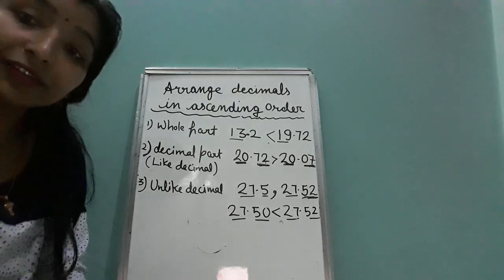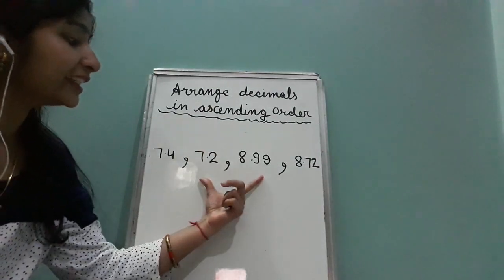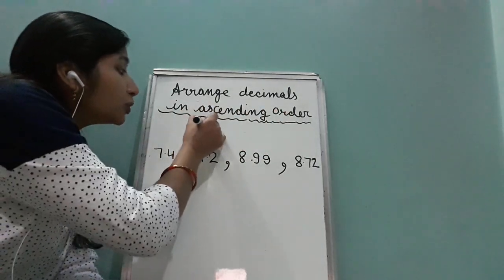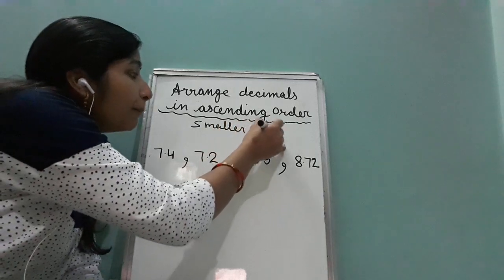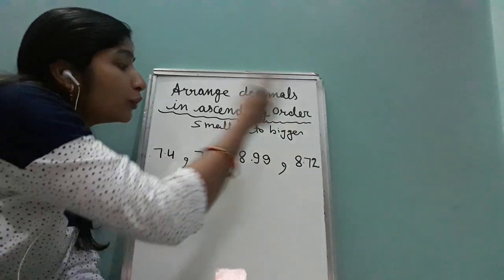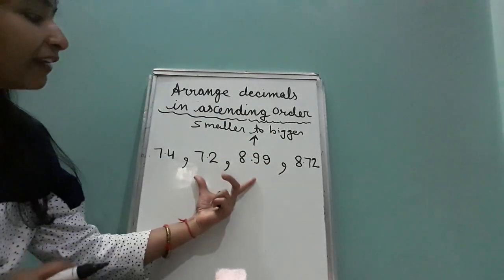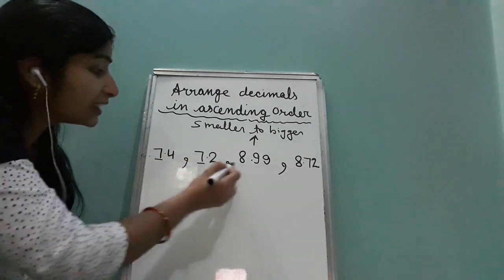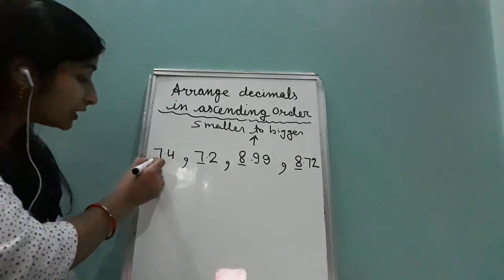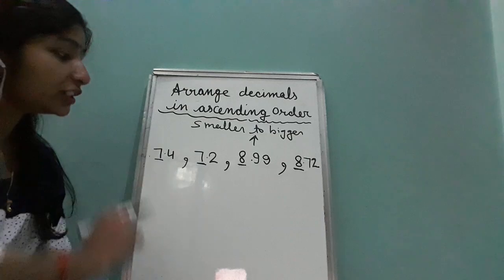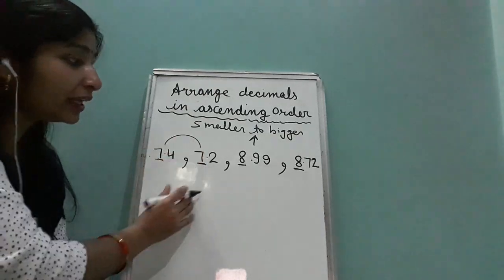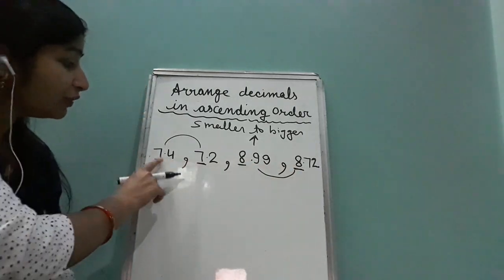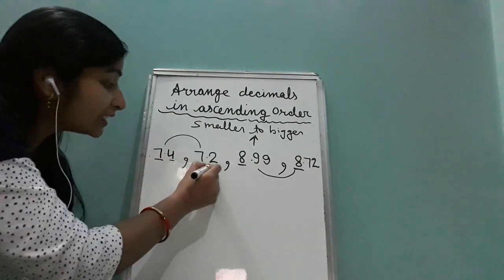Now we will arrange these decimal numbers into ascending order. Ascending order means smaller to bigger — we move from small to big, which is also called increasing order. Our first step is to see the whole part before the decimal. Here we have 7, 7, 8, 8 — so 7s are smaller and 8s are bigger.